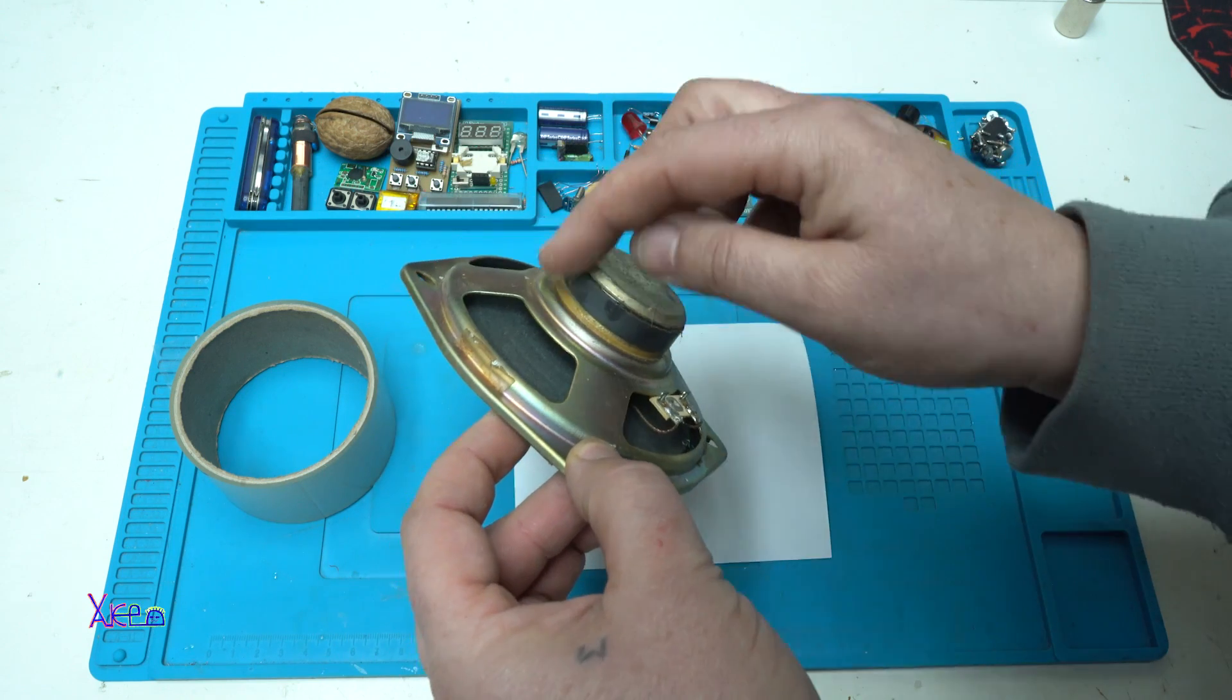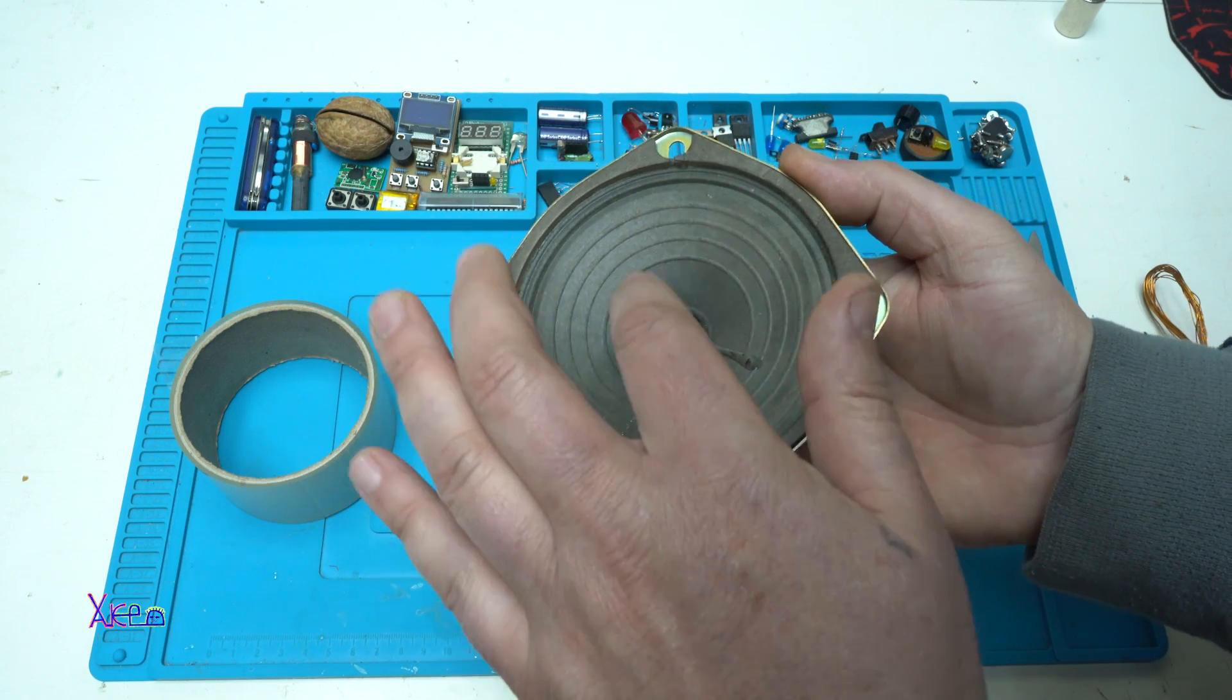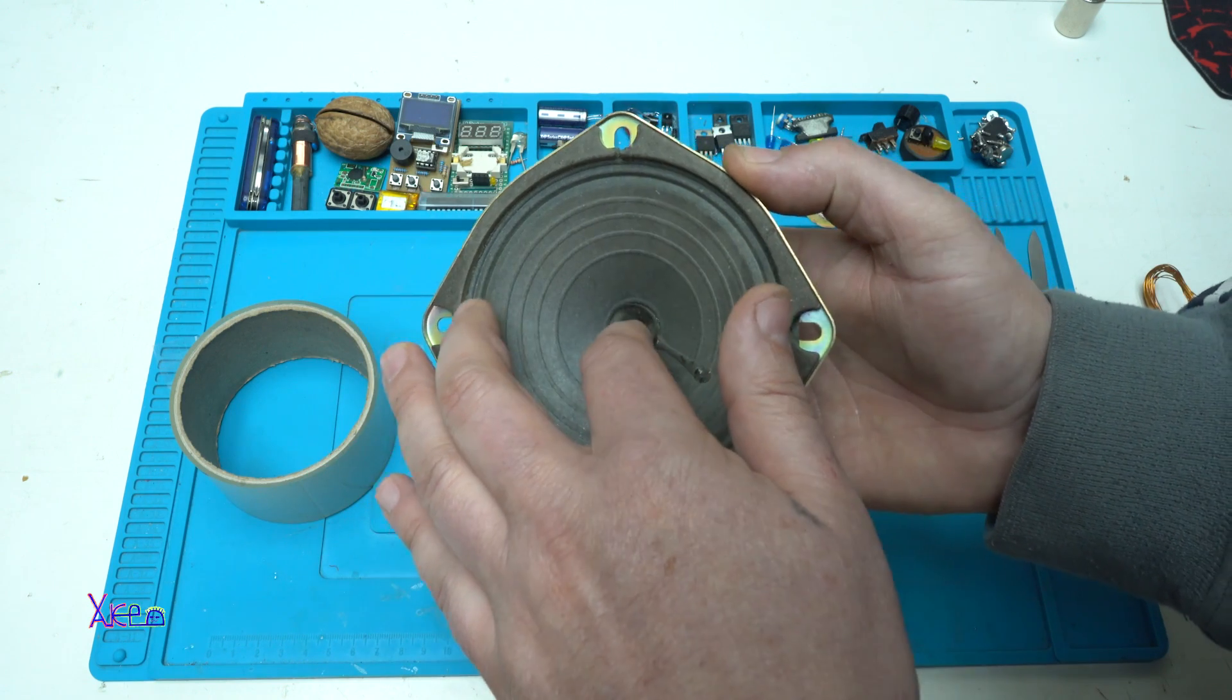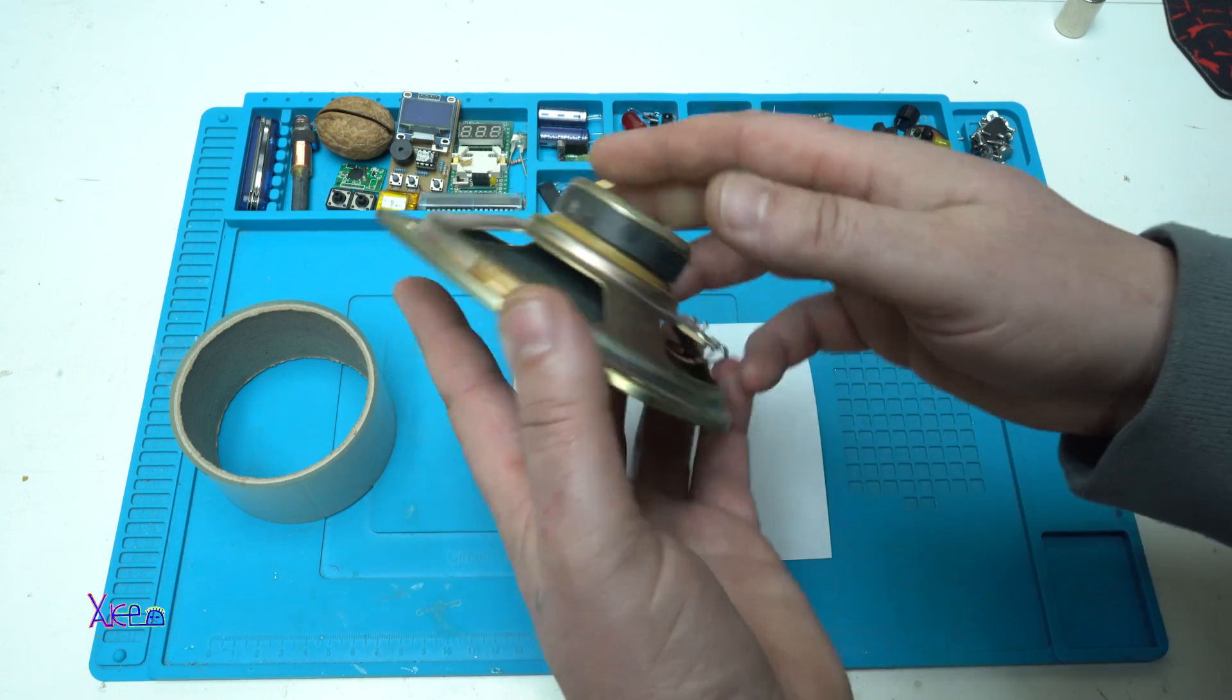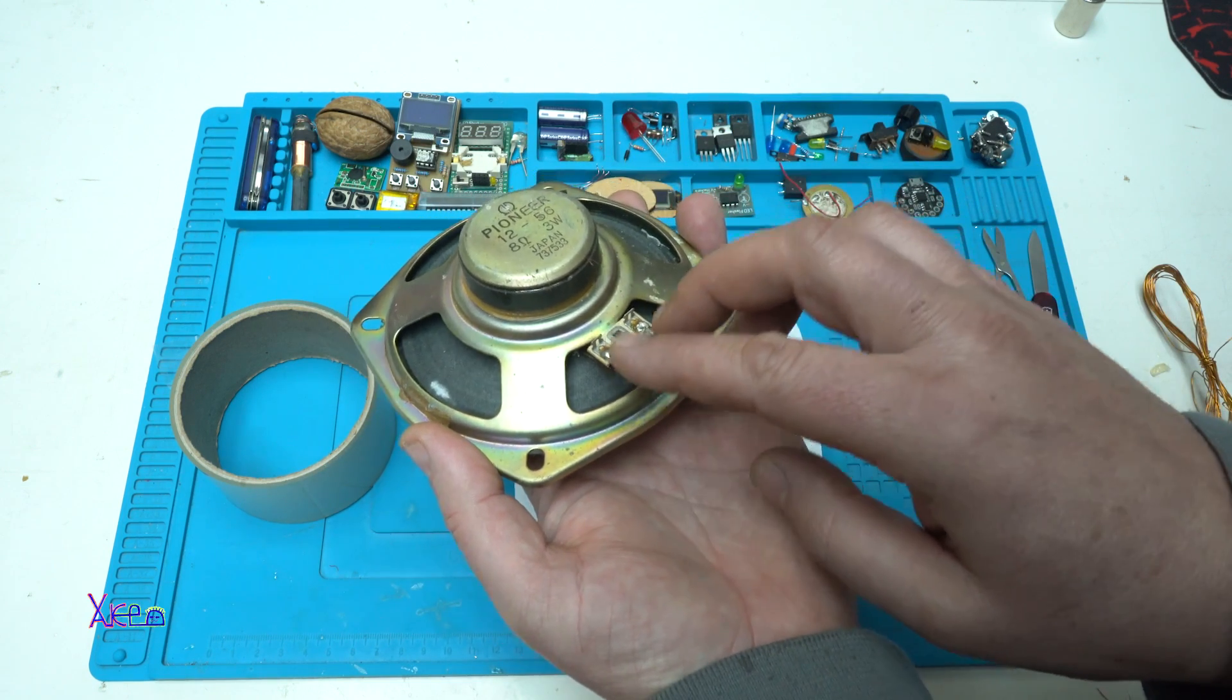It's made out of a magnet, a chassis, a membrane, inside there is a copper wire, and when you put signal from the amplifier, you hear the sound.